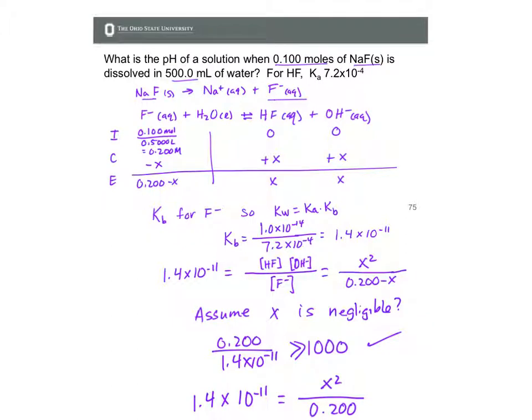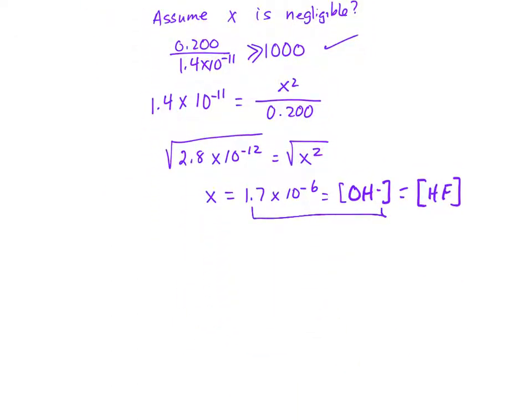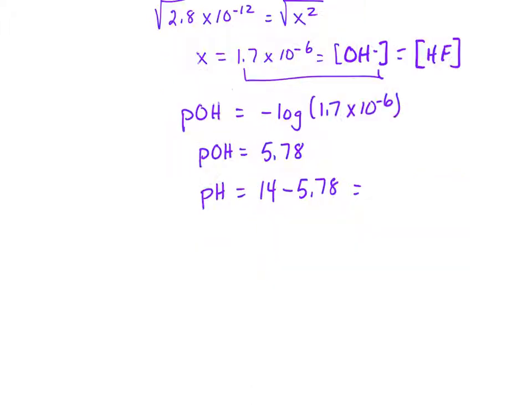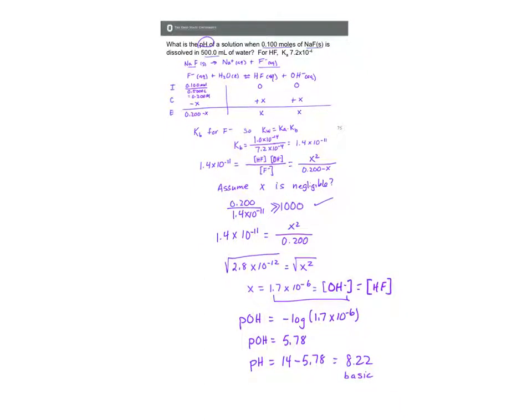We were asked to find the pH of the solution. From our hydroxide ion concentration we can find the pOH. That's equal to minus the log of 1.7 times 10 to the minus 6, and so our pOH is equal to 5.78. We can find the pH by taking 14 minus the pOH and ending up with 8.22 for our pH. So this is a basic pH greater than 7, assuming 25 degrees Celsius, and that's what we predicted based on the fact that fluoride ion forms OH minus in solution.